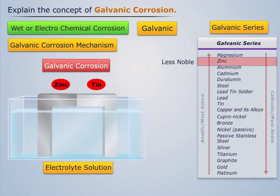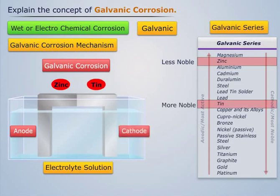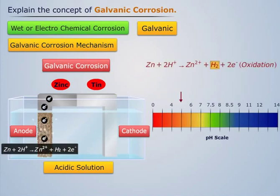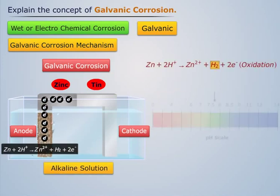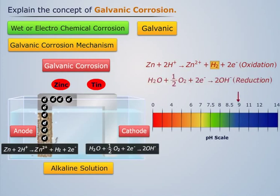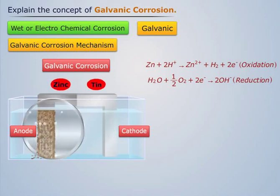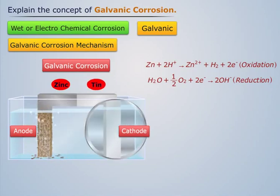Let us now understand the mechanism of galvanic corrosion. The less noble metal, zinc, acts as the anode, and tin acts as the cathode, which is lower in the galvanic series and is more noble. In acidic solution, the corrosion occurs by the hydrogen evolution process, while in neutral or slightly alkaline solution, oxygen absorption takes place. This electron current flows from the anodic metal zinc to the cathodic metal tin, and the corrosion occurs at the anodic metal zinc, while the cathodic part tin is protected from attack.